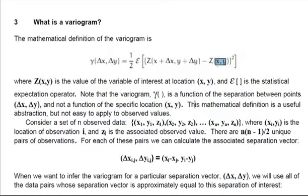When we want to infer the variogram for a particular separation vector, delta x, delta y, we will use all of the data pairs whose separation vector is approximately equal to this separation of interest. So basically we'd have to do a lot of calculations. But one important thing to remember is that gamma is a function of the specified separation delta x and delta y. We're going to change delta x and delta y and see what happens to gamma.